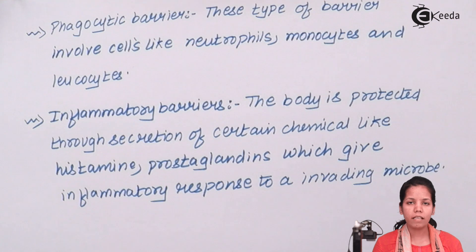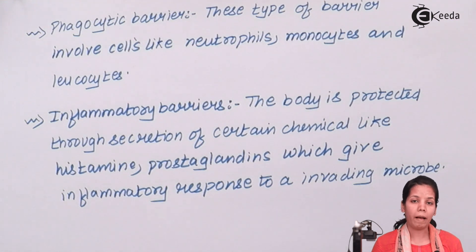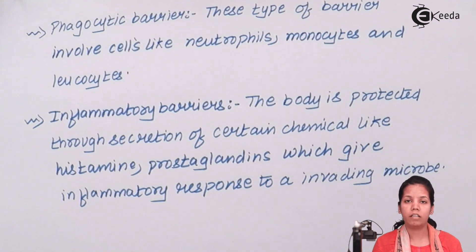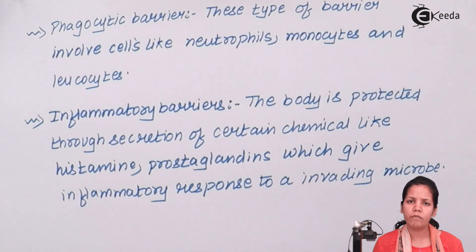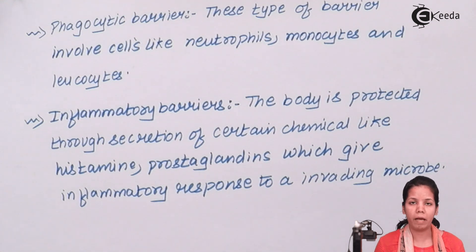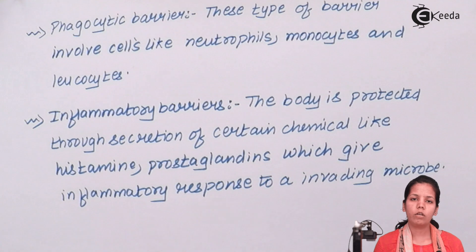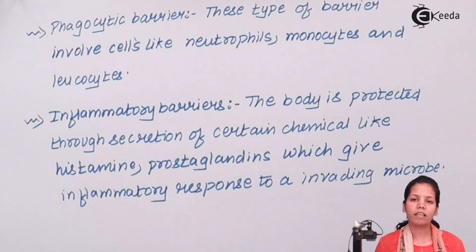Students, this was all about the barriers present for innate immunity in your body. Every individual among us has all four barriers. I hope you are all clear about this concept. Thank you.